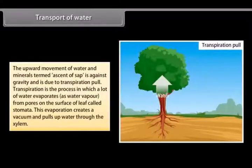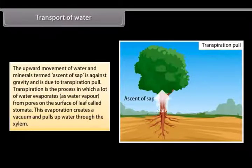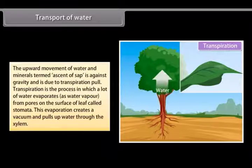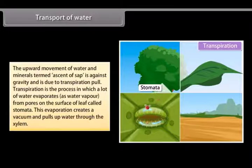The upward movement of water and minerals, termed the ascent of sap, is against gravity and is due to transpiration pull. Transpiration is the process by which a large amount of water evaporates as water vapour through pores on the leaf surface called stomata. This evaporation creates a vacuum and pulls water up through the xylem.